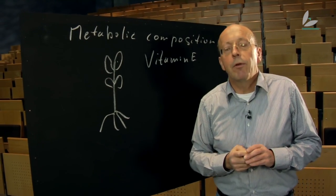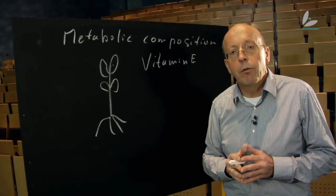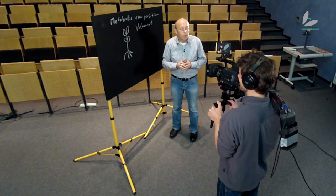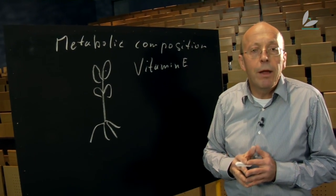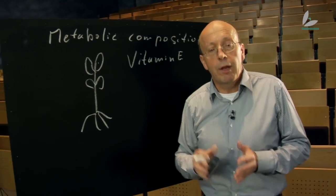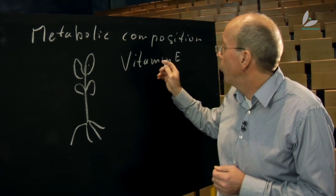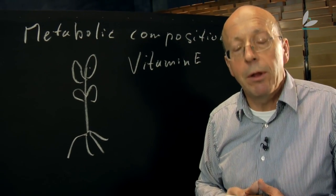Vitamin E is very important for human nutrition and it is one goal to try to understand the formation of vitamin E in higher plants. And once you understand it, then of course you can try to also improve and increase it. Therefore, by a combination of analyzing the metabolic composition of plants with genetic approaches, we can unravel the way how vitamin E is produced and therefore help breeders to produce plants with a higher vitamin E content.